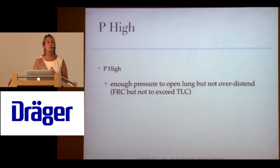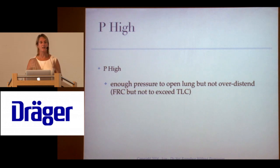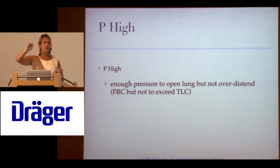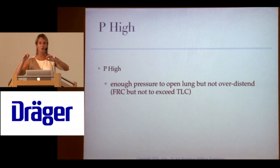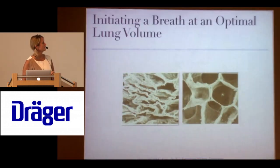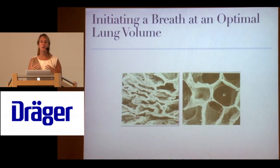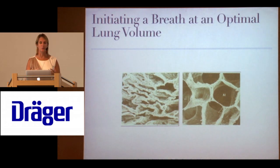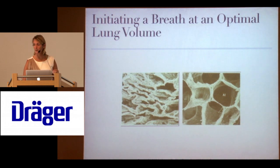The pressure high is enough pressure to open the lung but not over-distend. On your pressure-volume curve, you want to be on the steep portion. Patients don't like to breathe at too low or too high a pressure. We want enough pressure to achieve FRC but not exceed TLC. The goal is to initiate a breath at an optimal lung volume — by restoring FRC, the patient can take a breath from a better position.